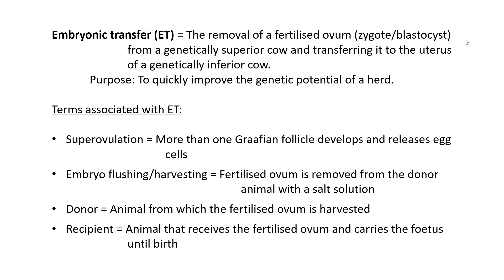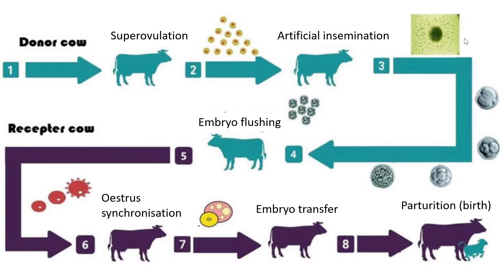The donor animal is the animal from which the fertilized ovum is taken, harvested, or flushed. The recipient animal is the one that receives the fertilized ovum and carries the fetus until birth. The recipient is the one that will actually give birth to the baby, because the embryo has been removed from the donor's body and placed into the recipient's body. The recipient is in essence the mother that gave birth — not the biological mother, but the one who carried and delivered the offspring.